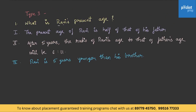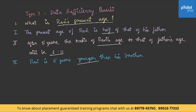In Type 3: What is Ravi's present age? There are three statements given. The first states that the present age of Ravi is half of that of his father. The second: after 5 years, the ratio of Ravi's age to that of his father's age will be 6 to 11. The third: Ravi is 5 years younger than his brother. We need to find out which statements are sufficient to answer the question. Let us name this type as data sufficiency problems.